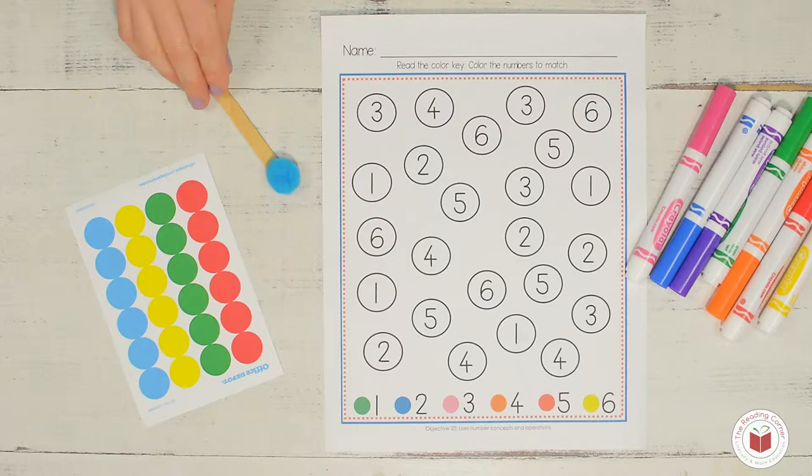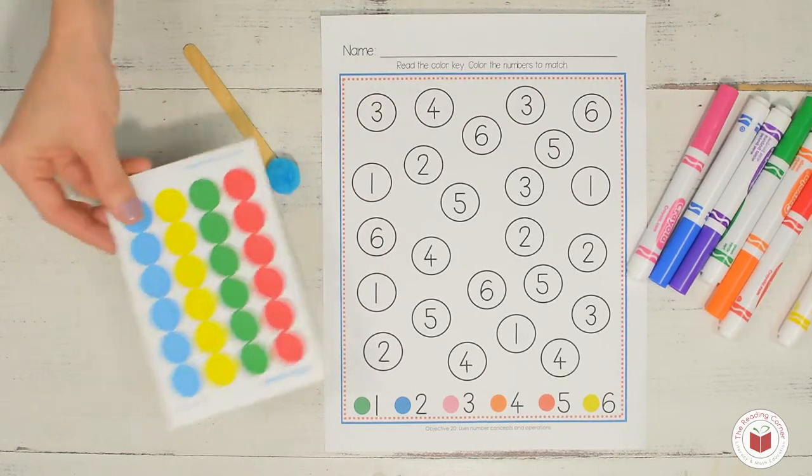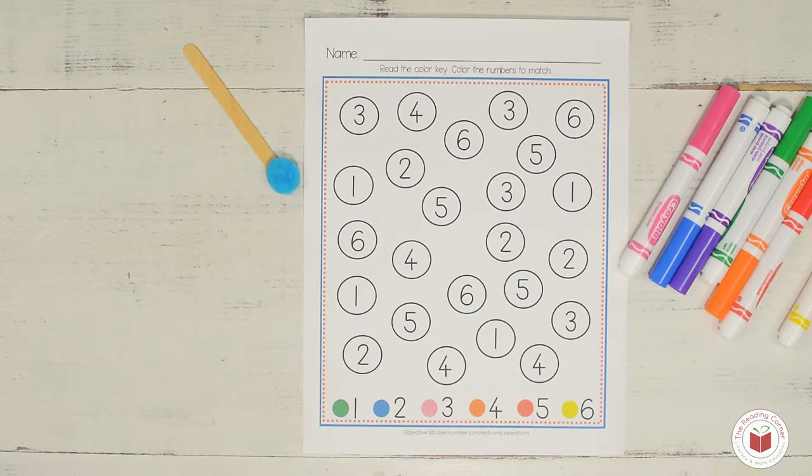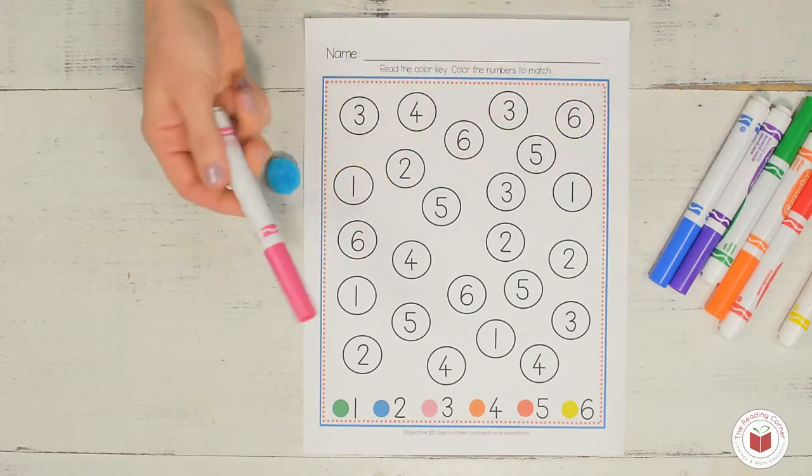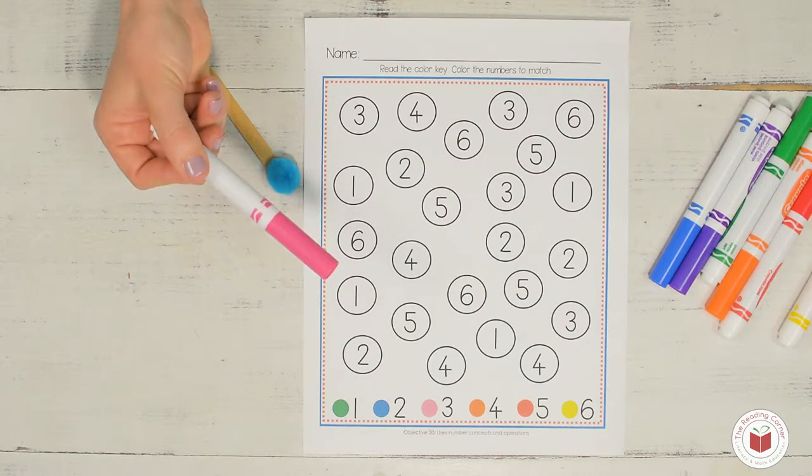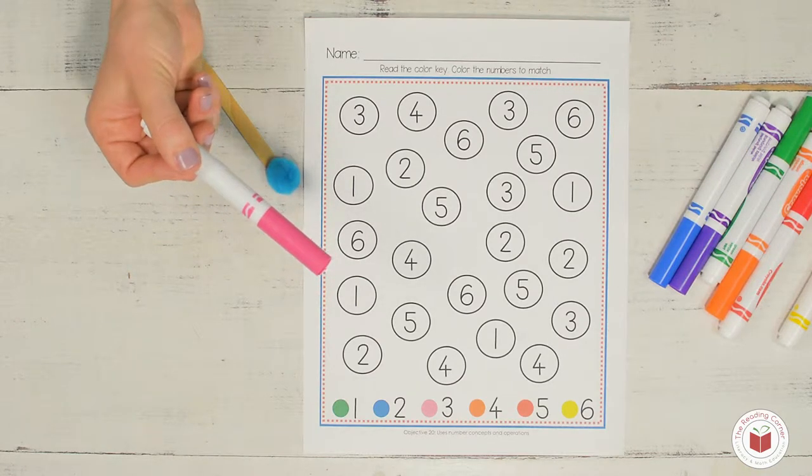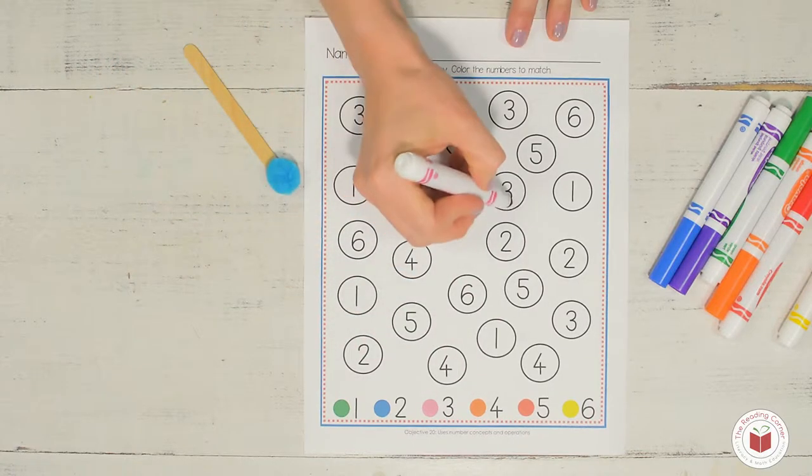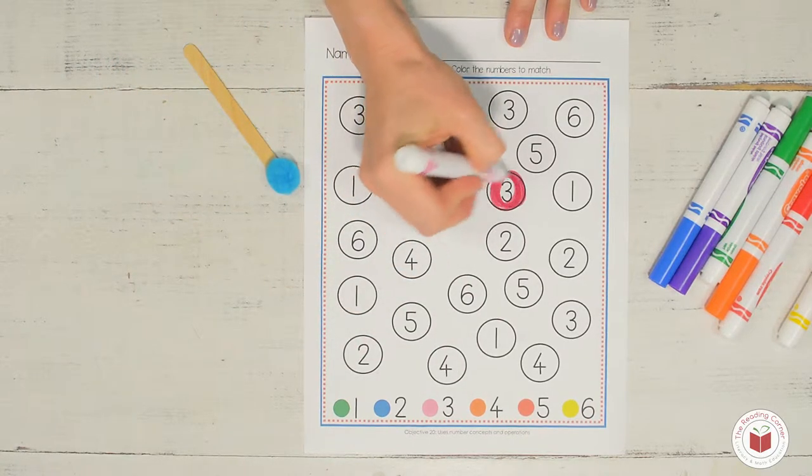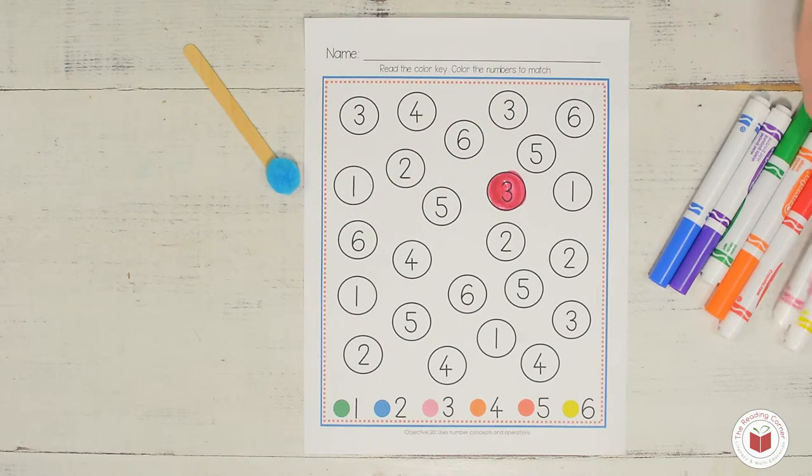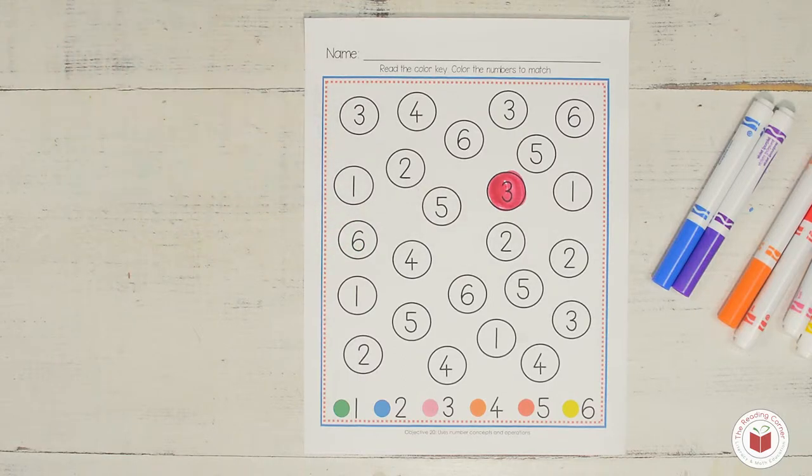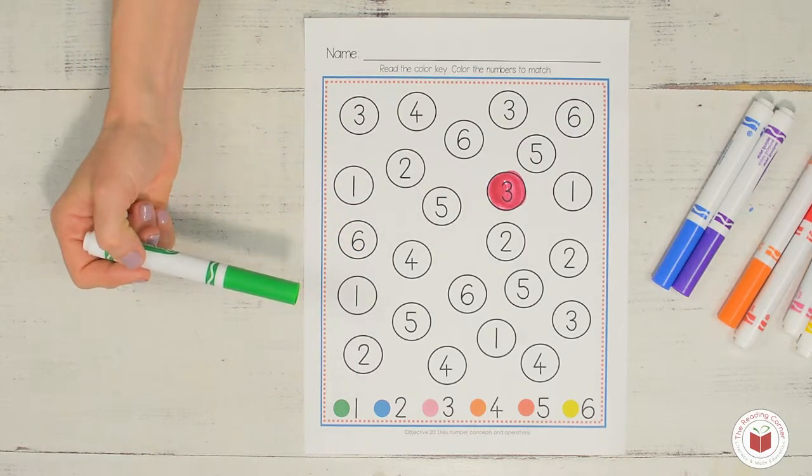So the first way we're going to do this activity is we're going to get some markers or crayons. I'm going to pick a color. What color is this? That's right, it's pink. Do you see what number I should be coloring with the color pink? Number three. Now let's pick another color. What color is this? Green. What number am I going to color with the color green?